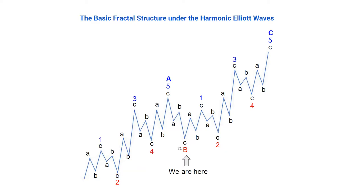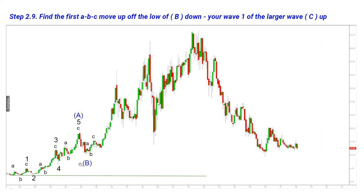Moving on: we got an impulsive five-wave move counted as larger wave A, and we got A-B-C down counted as corrective larger wave B. So now we should expect another five-wave move up — that would comprise a larger wave C. Normally, larger wave C would be at least equal in size to wave A, and sometimes it can stretch to 200% of the size of wave A. That's why it's really important to find where wave B bottoms — it's a great place to start going long again.